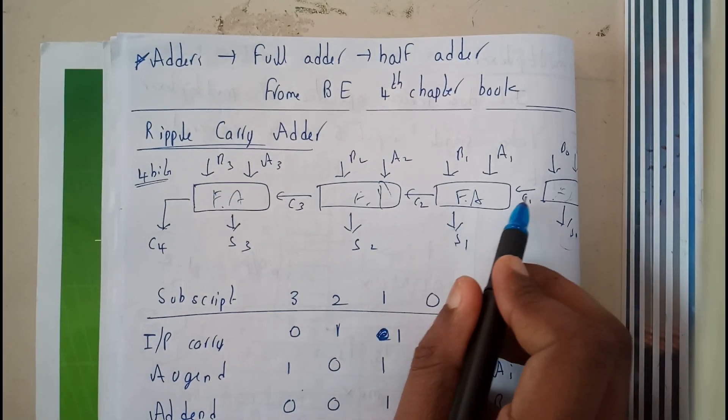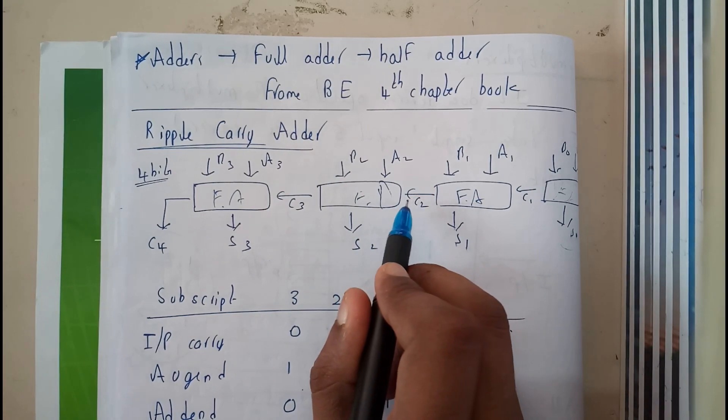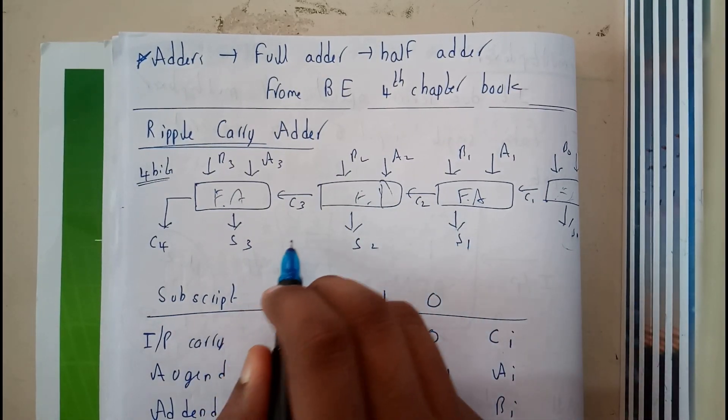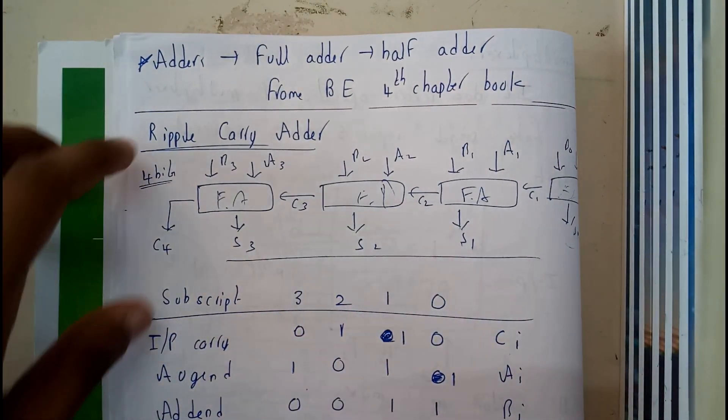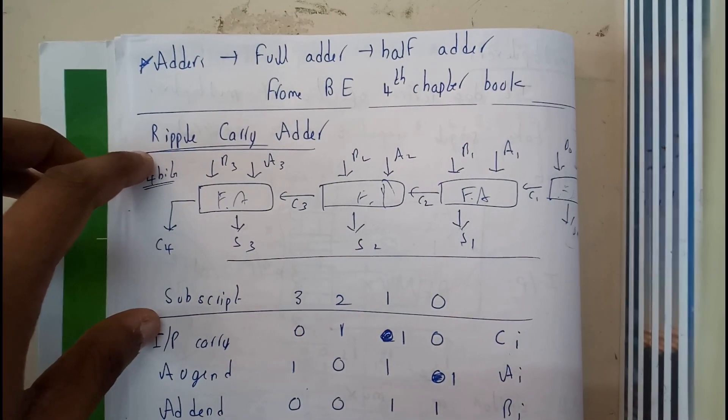So it further moves on with the carry, transferring to the next one and finding the sum values. At the end we will be summing all these values to get the output. So now I hope everyone got a small idea on this diagram.